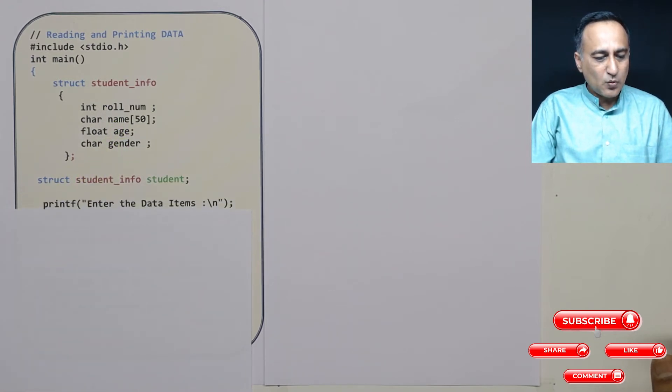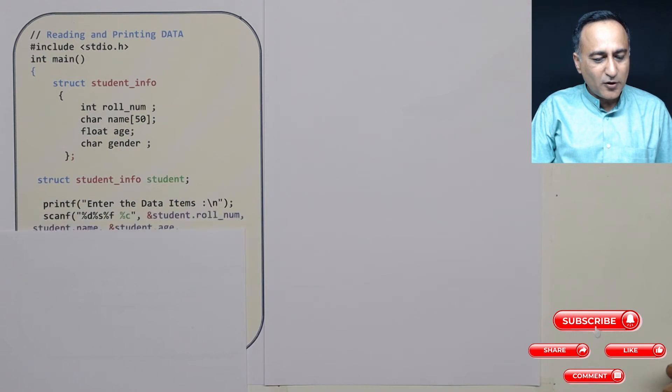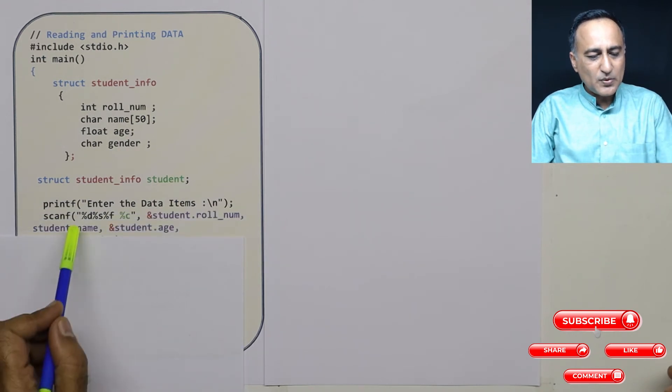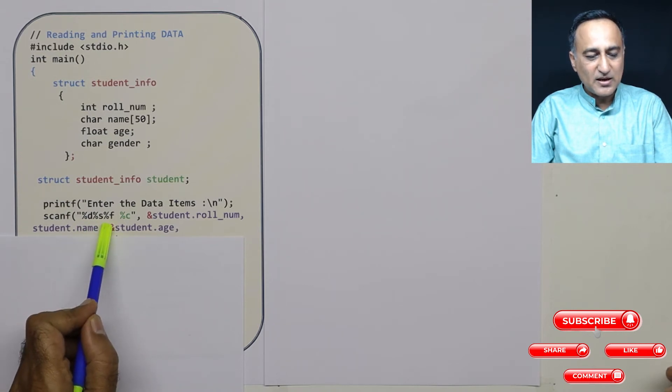Then next, I am asking the user to enter the data items. That means I need to read the roll number, name, gender and age. If you look at this part, it is very similar: percentage D because roll number is an int, percentage S because name is a string, percentage F because age is a float.